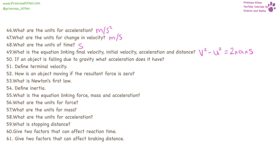If an object is falling due to gravity, the acceleration it has is 9.8 metres per second squared — that is the value for gravity. Terminal velocity is the speed at which something is travelling when all forces on it are equal.